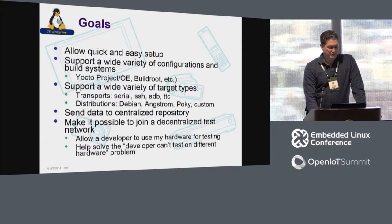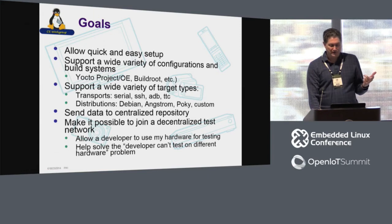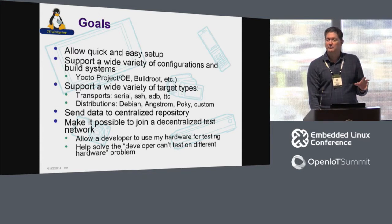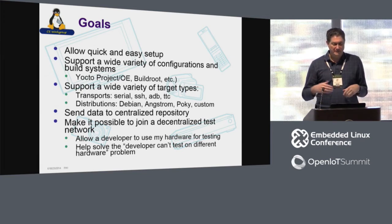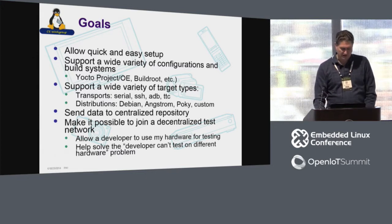The goals for Fuego: we want to allow really quick and easy setup, support a wide variety of boards, transport types, and distributions, eventually send the data to a centralized repository, and make it possible to join a decentralized test network. People are building board farms with things like Kernel CI, but there's a lot of overhead in that. Basically, I want a board farm to consist of a developer on their development machine and a single board, making it easy for that developer to join a decentralized network and share tests and results with other developers.